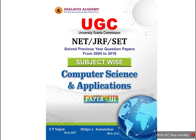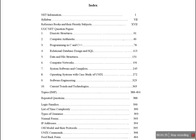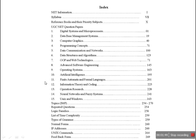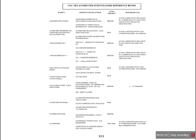Now we are giving a subject-wise book because UGCNet exam covers nearly 25 subjects. Paper 2 contains 10 chapters and Paper 3 contains 15 chapters. It is very difficult to study all subjects thoroughly. Instead, we can study based on the clarity of the subject. In this book, we have given a table of subjects and their priorities, decided based on previous year question papers.